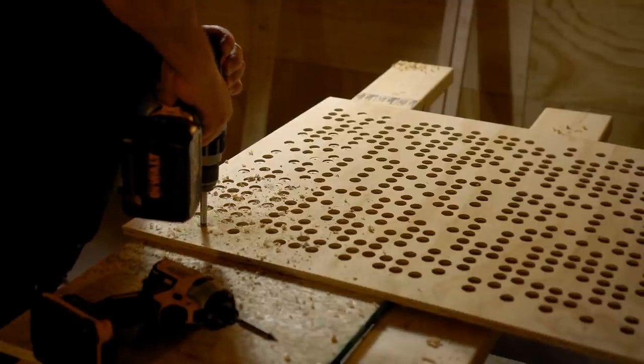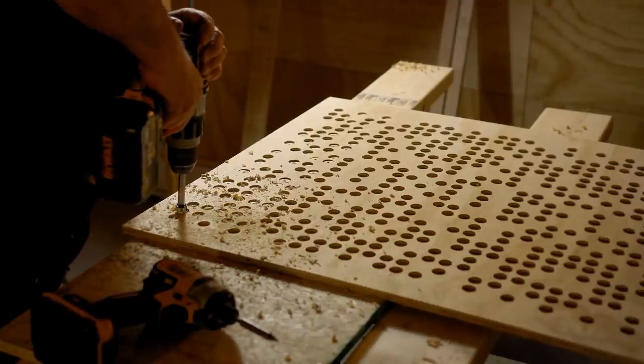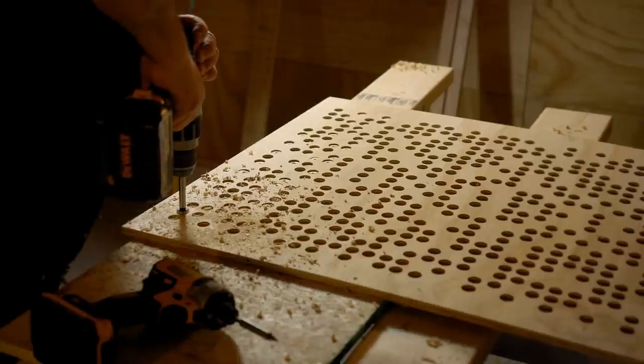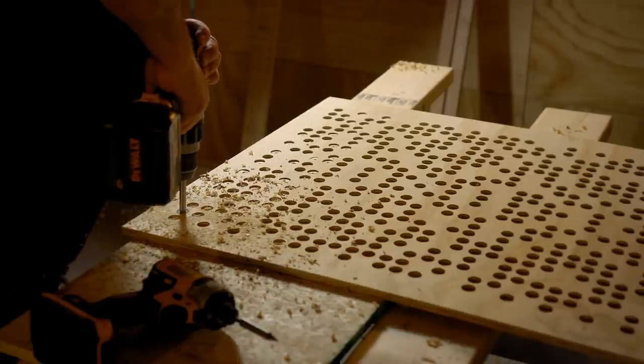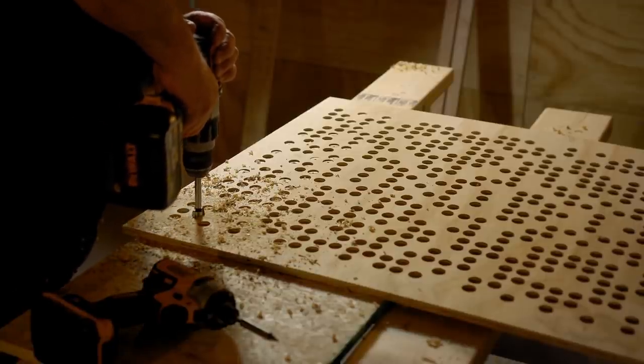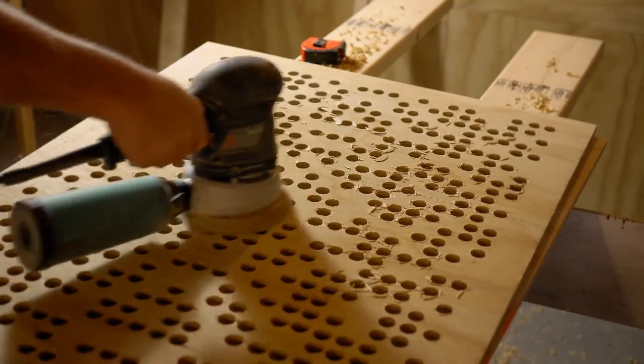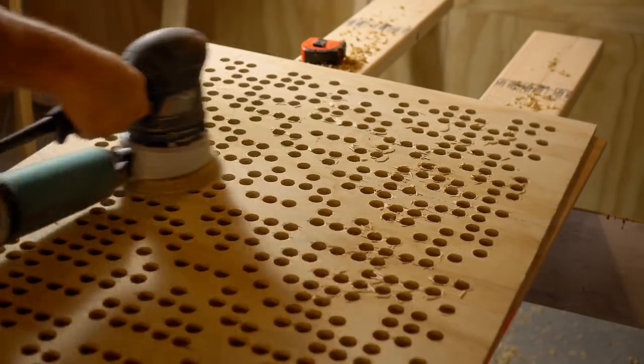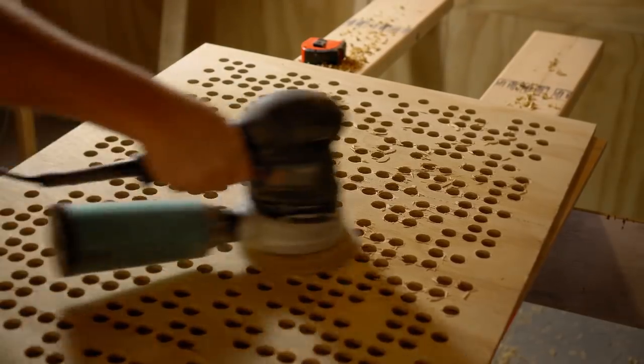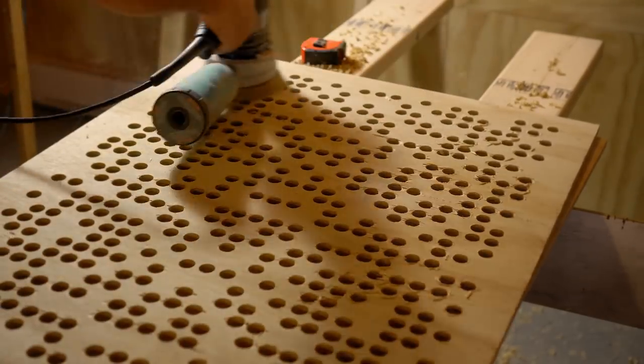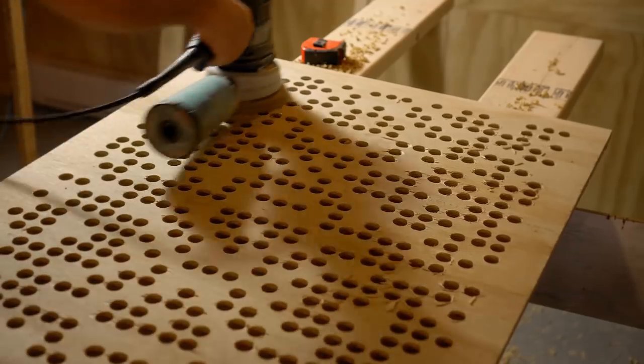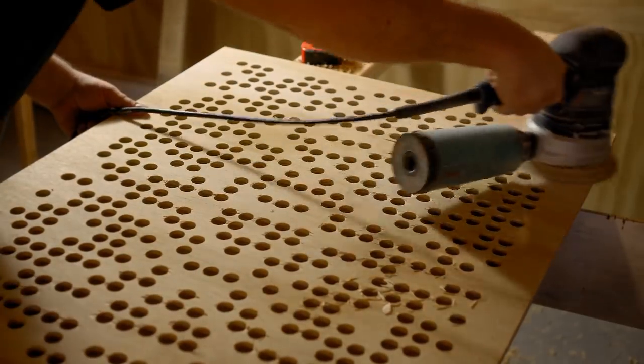And as for what to use for backer I would recommend using something like MDF. Here in the video you can see I'm using OSB but the glue that they use in OSB seems to be harder or at least maybe they use more of it than in MDF and it tends to dull the bit very quickly. So as you drill through the panel and into the OSB you're wearing out your bit quicker whereas MDF is very easy to drill into.